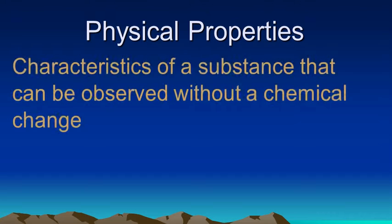Physical properties can be defined as the characteristics of a substance that can be observed without a chemical change or chemical reaction. And so normally you can just look at something or feel it or weigh it. That doesn't require a chemical reaction. So for example we can talk about the temperature of something. That's a physical property.